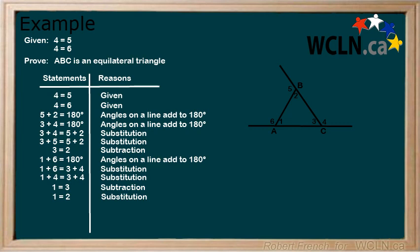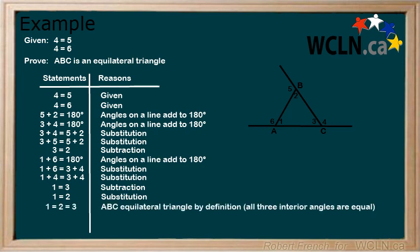Finally, we have shown that angle 1 equals angle 2 equals angle 3, and therefore ABC is an equilateral triangle.